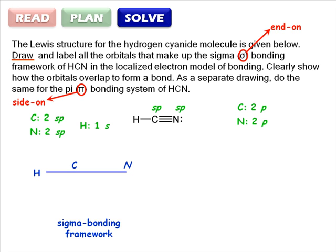We know from the Lewis structure that there is a sigma bond between the carbon and nitrogen, so let's start there. Use one of nitrogen's sp orbitals to point towards carbon, and use one of carbon's sp orbitals to point towards nitrogen. That end-on overlap forms a sigma bond.